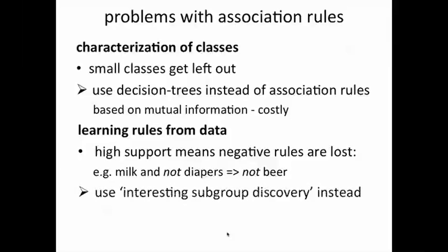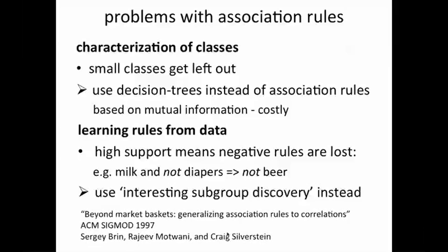In such situations, one does something a little different and techniques called interesting subgroup discovery are used instead. They are very similar to association rules. However, instead of relying only on high support, they look for correlations in the data. One of the earliest papers that talked about this concept was in 1997 by Sergei Brin and Mutwani and Silverstein. Sergei Brin, of course, is one of the founders of Google and this is before Google.